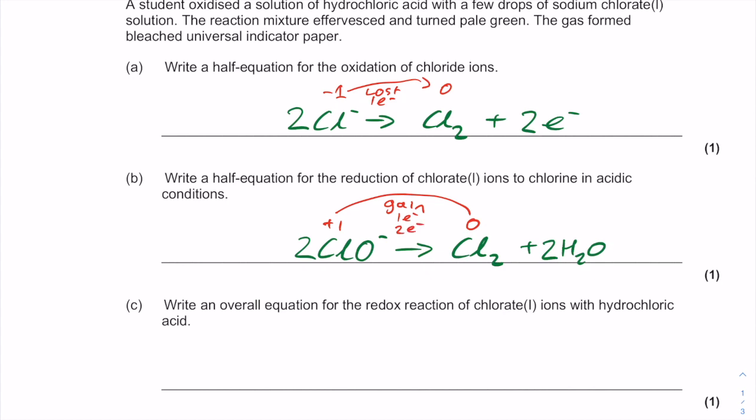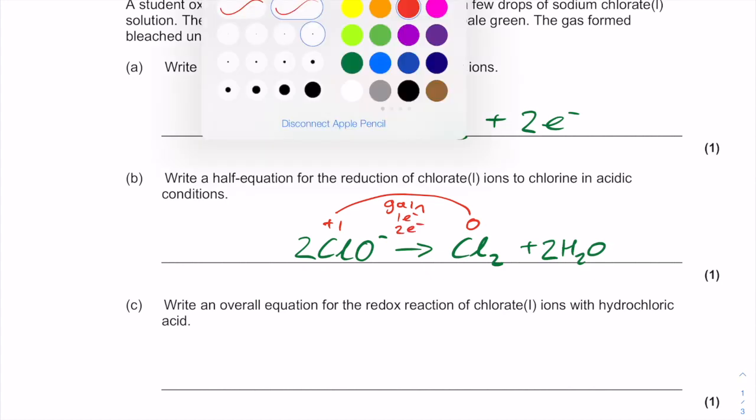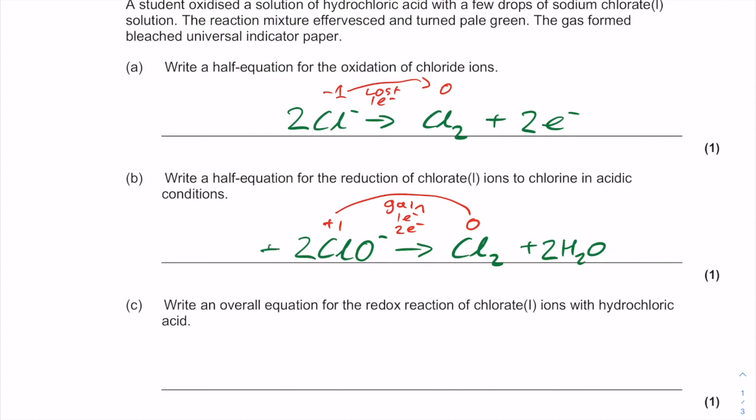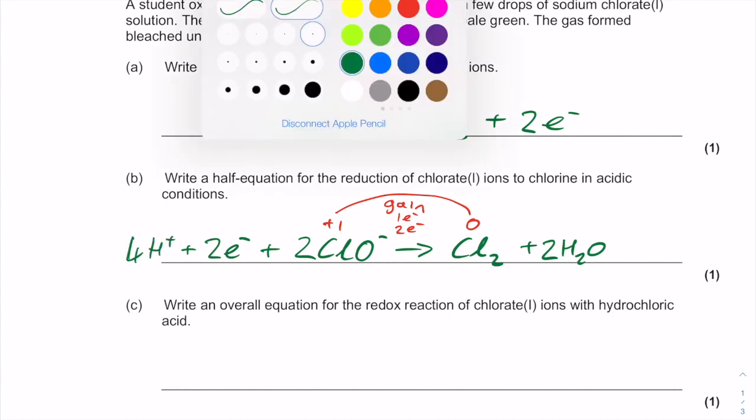If it's gaining one electron per molecule, that's actually going to be 2 electrons because we've got two ClO. So we're going to stick 2 electrons then on this side of the equation. Two electrons react with two chlorine atoms to make Cl₂ and the water's balanced there with ClO. Last thing for us to do is to put some hydrogens in.